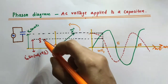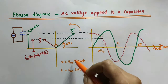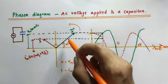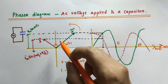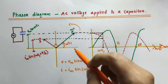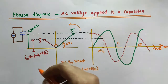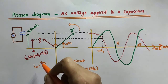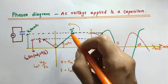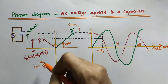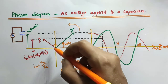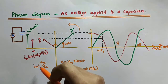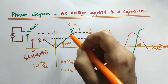The current phasor is drawn ahead of the voltage phasor because current leads the voltage by π/2. The length of the phasor gives us the amplitude of that quantity. Im is equal to Vm divided by Xc, so Im will be less than Vm. That is why the current phasor is drawn with a length less than the voltage phasor — its amplitude is less than the voltage amplitude.